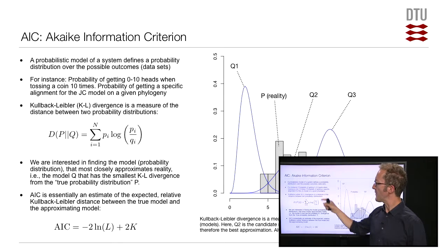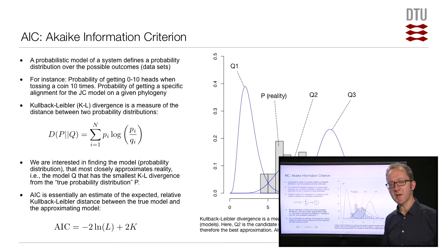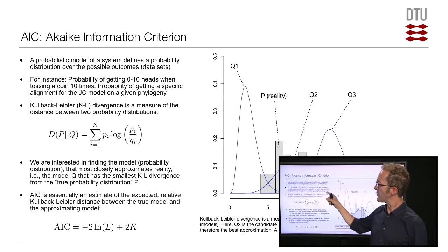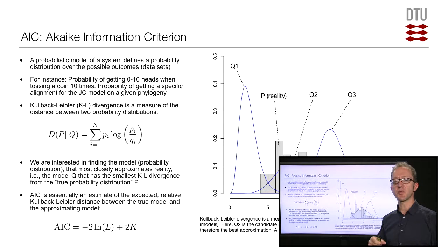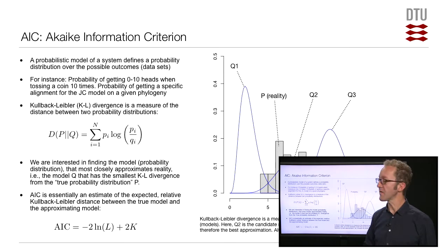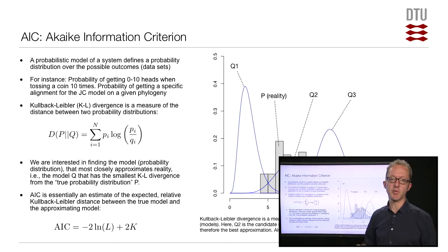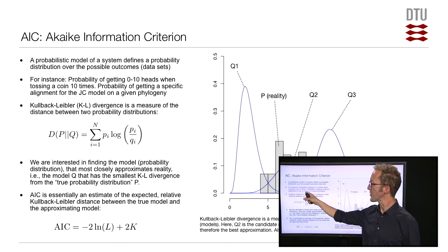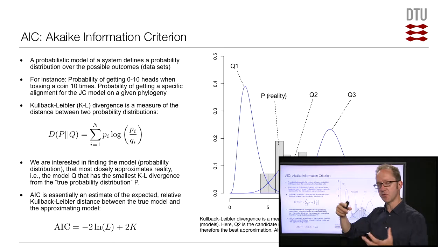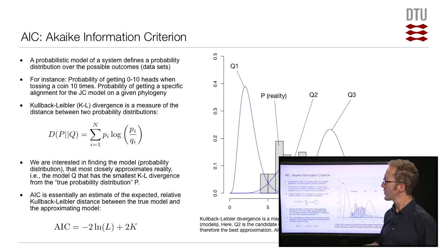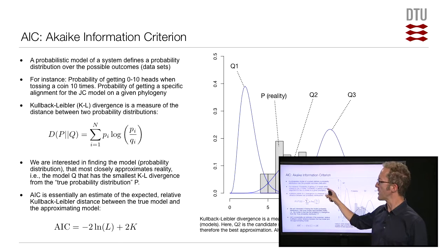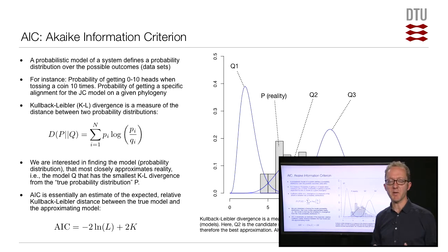If you have a phylogenetic problem, having a probabilistic model allows you to compute the probability of any given alignment. For given parameters in the Jukes-Cantor model, a given tree, given branch lengths, etc., you can compute the probability of any possible alignment, any possible data set.